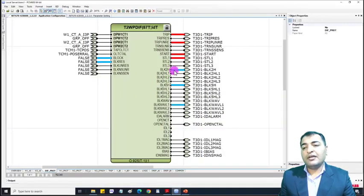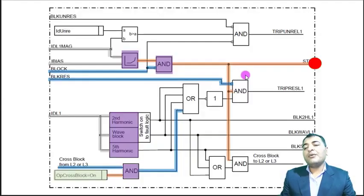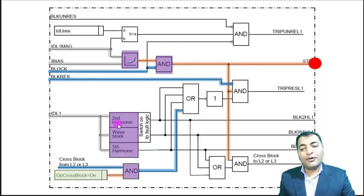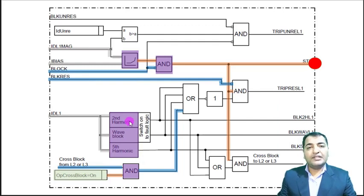In the outputs also we have these values. Now let's see if the second harmonic detected or it is above the value which we set in the parameter.